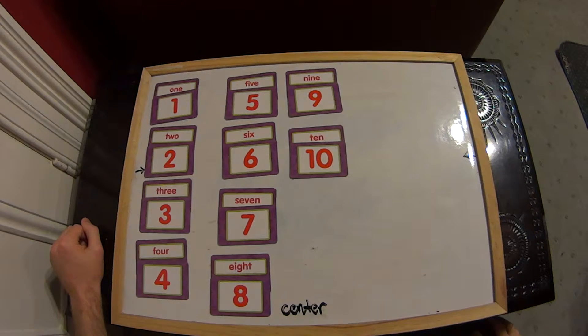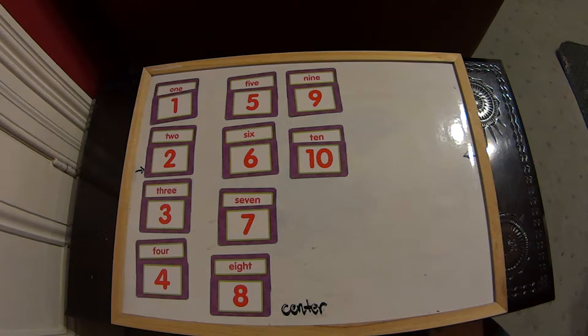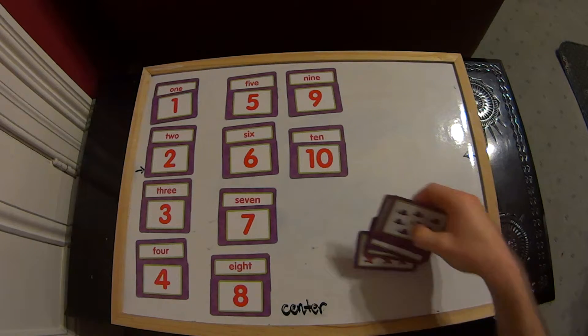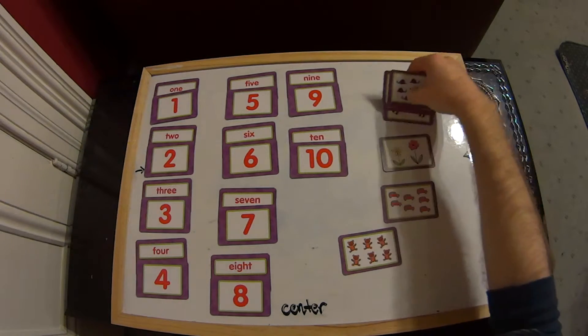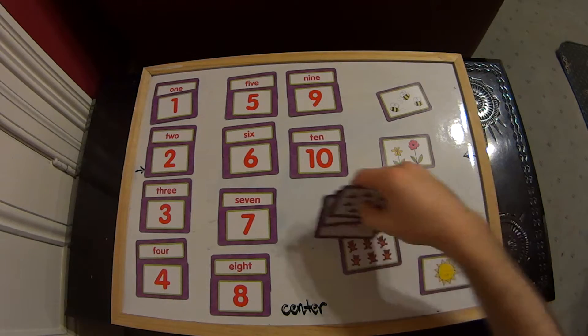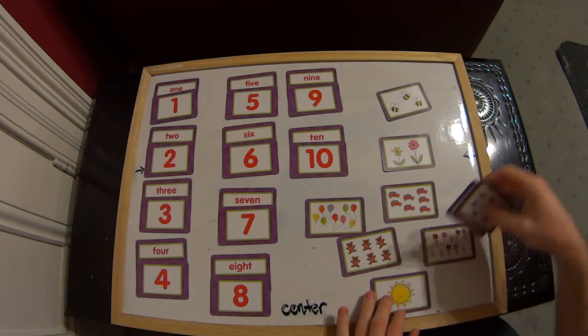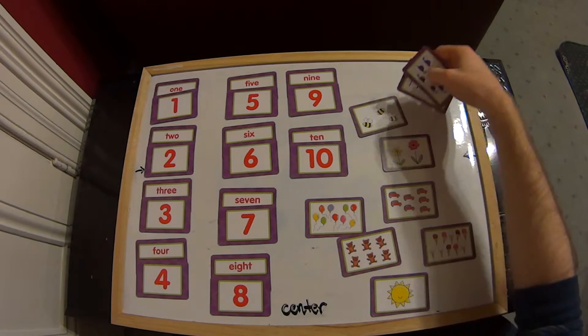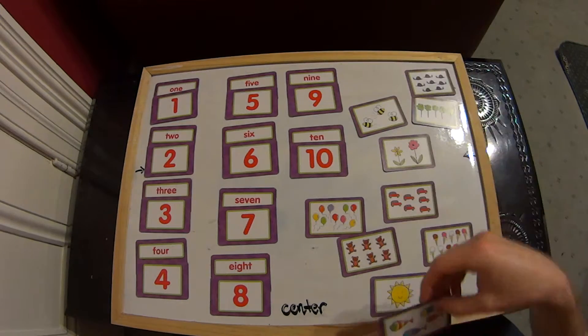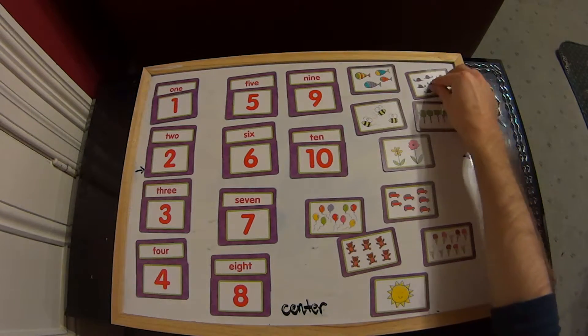Great work. Now, the one other thing I want to do is I also want to match some values of objects. So if we spread out all these different objects here, let's see if we can match these to our symbols and names.